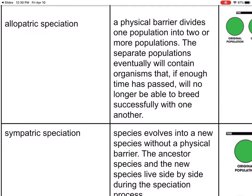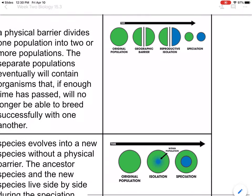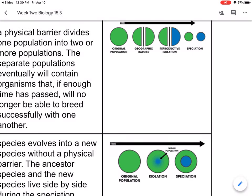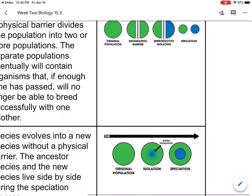Allopatric speciation: a physical barrier divides one population into two or more populations. The separate populations eventually will contain organisms that, if enough time has passed, will no longer be able to breed successfully with one another. The original population gets divided — maybe it's the plates separating — they're no longer on the same land, isolated from each other, and now we have two different speciations.